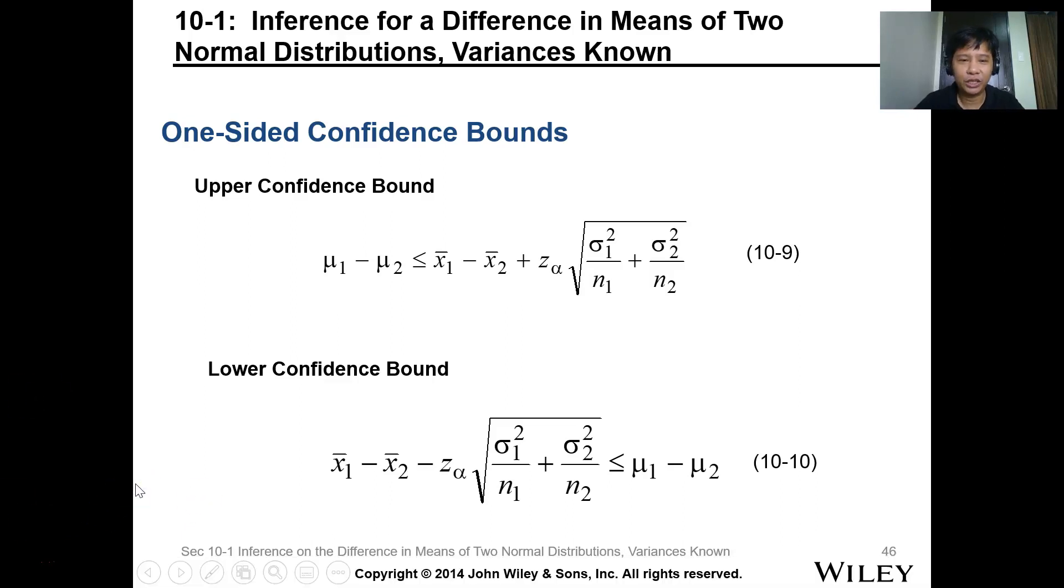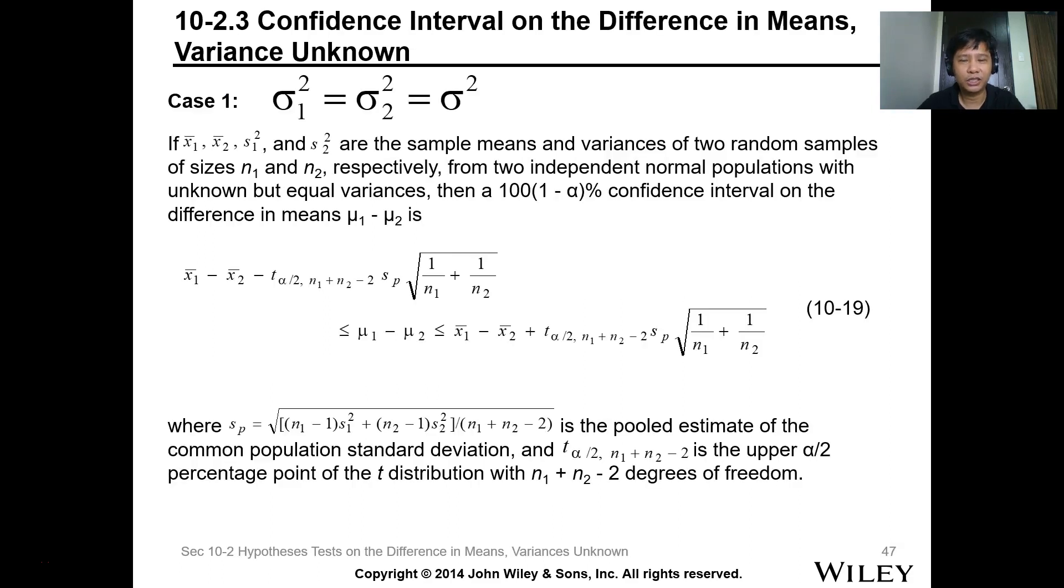Okay everyone, we're on the continuation for lesson 7 which is for the multiple samples, and our next topic will be the confidence interval on the difference of the mean when variance is unknown. Previously we discussed where the variance of the population is known, and now the second one is the variance of the population is unknown.